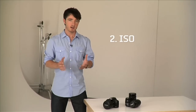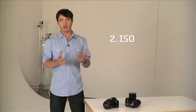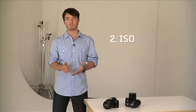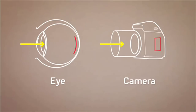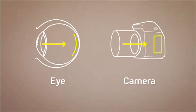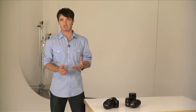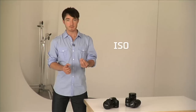So now, ISO. ISO is a measure of how light sensitive the camera is. With digital cameras, you can change the sensitivity of the sensor by simply changing the ISO. Using our eye analogy again, you can think of it as the retina at the back of your eye, which is the part that actually captures the image. So the higher the number, the more light sensitive the sensor in the camera is.